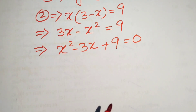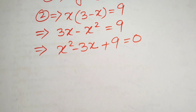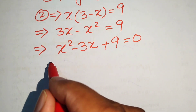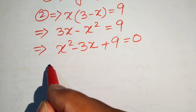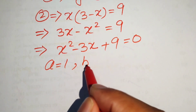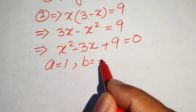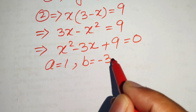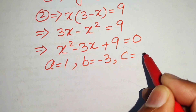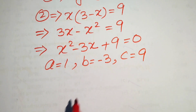This equation is now in the standard form of a quadratic. We identify the coefficients: a equals 1, b equals minus 3, and c equals 9.